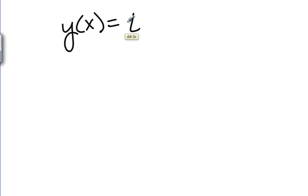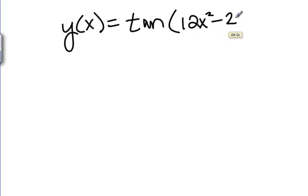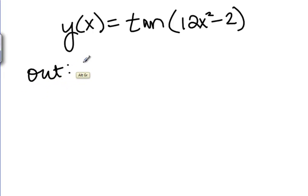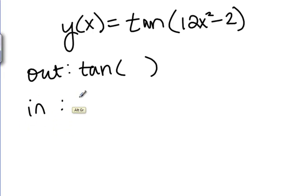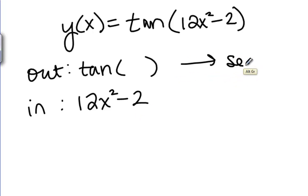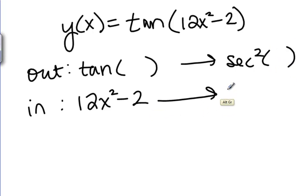Let's try this in another example. Say we want to find the derivative of Y of X equals tangent of 12X squared minus 2. The outside function here is tangent of something and the inside function is 12X squared minus 2. When we take the derivative of tangent we get secant squared of something, and when we take the derivative of 12X squared minus 2 we get 24X.